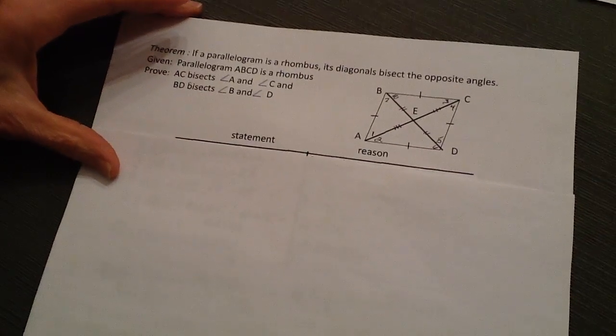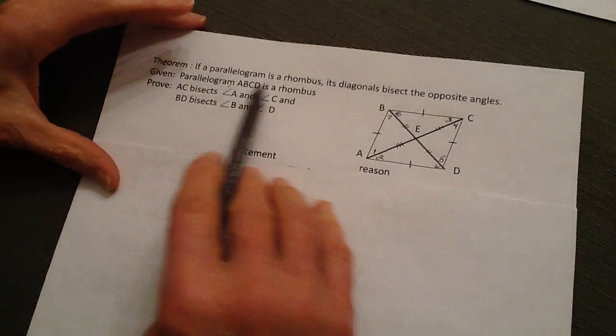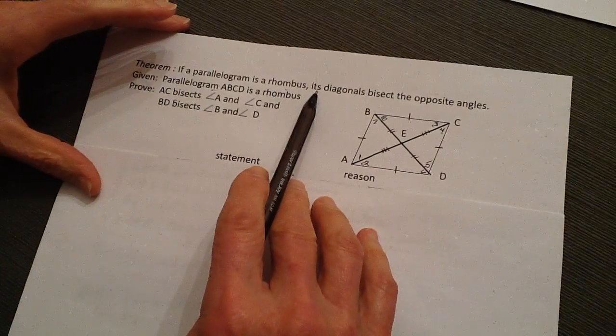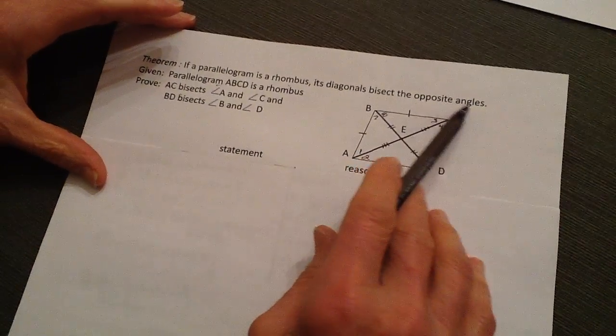Today we can prove the theorem that if a parallelogram is a rhombus, then its diagonals bisect the opposite angles.